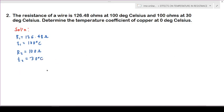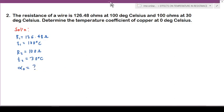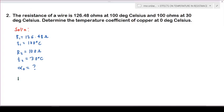Then we have our R2 which is equal to 100 ohms, and our t2 which is equal to 30 degrees Celsius. So we need to determine our alpha at zero degrees Celsius. We have our R1 and R2, so we can use the formula.